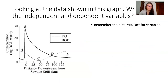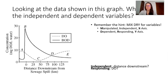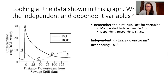Here's a quick one. Remember your MIX DRY? What are the independent and dependent variables in this graph? Ready? How about distance downstream and dissolved oxygen? Are those good answers?